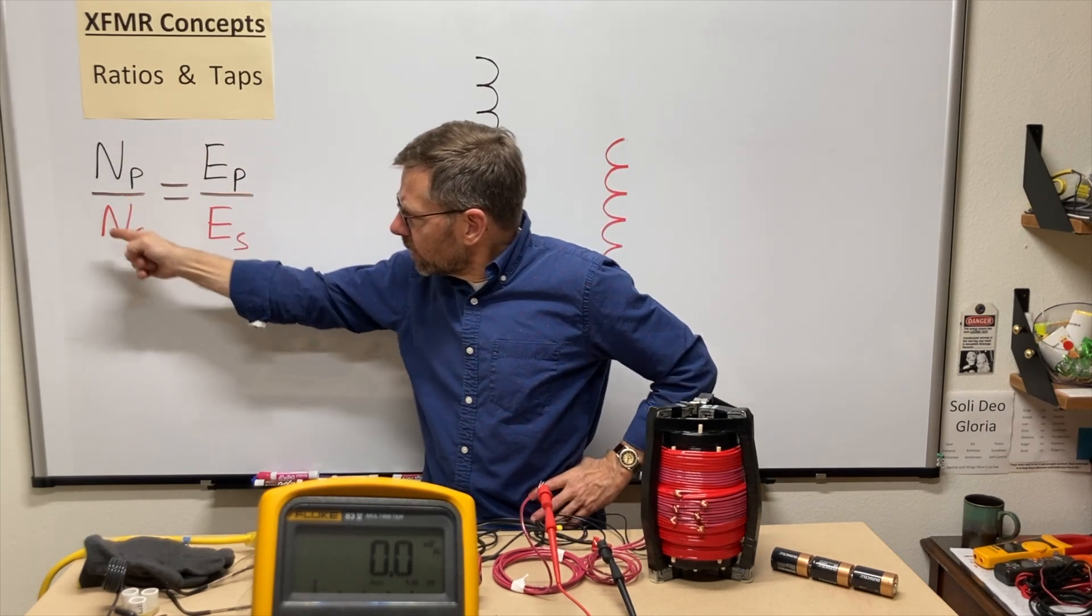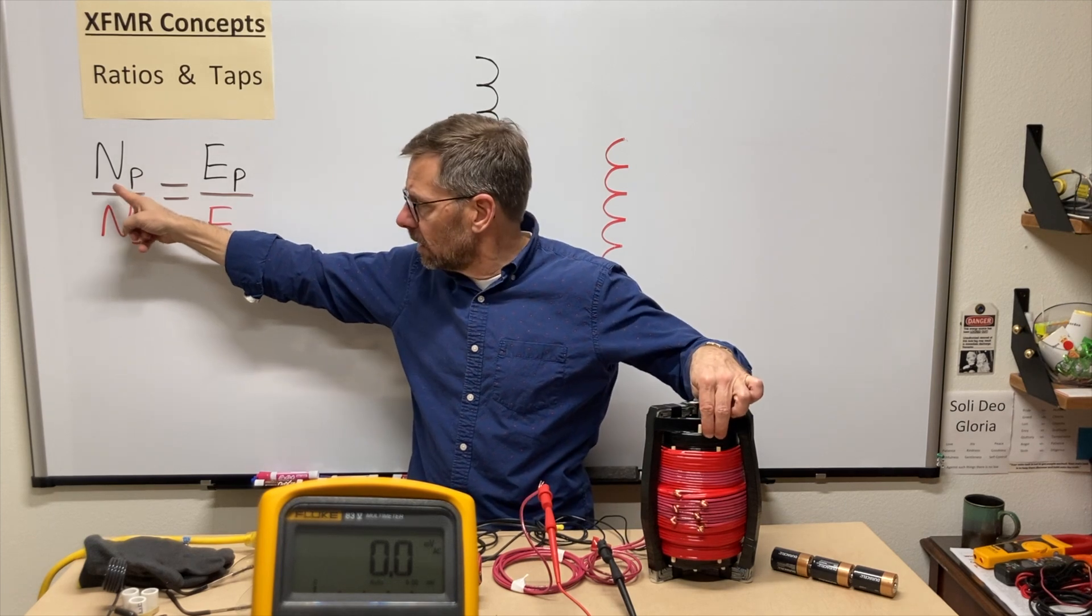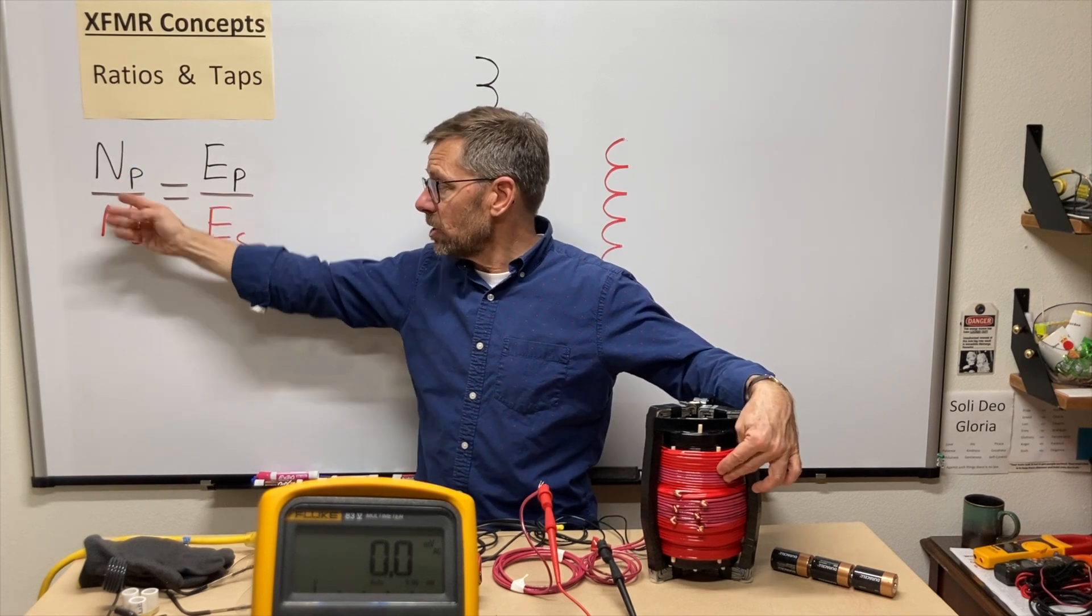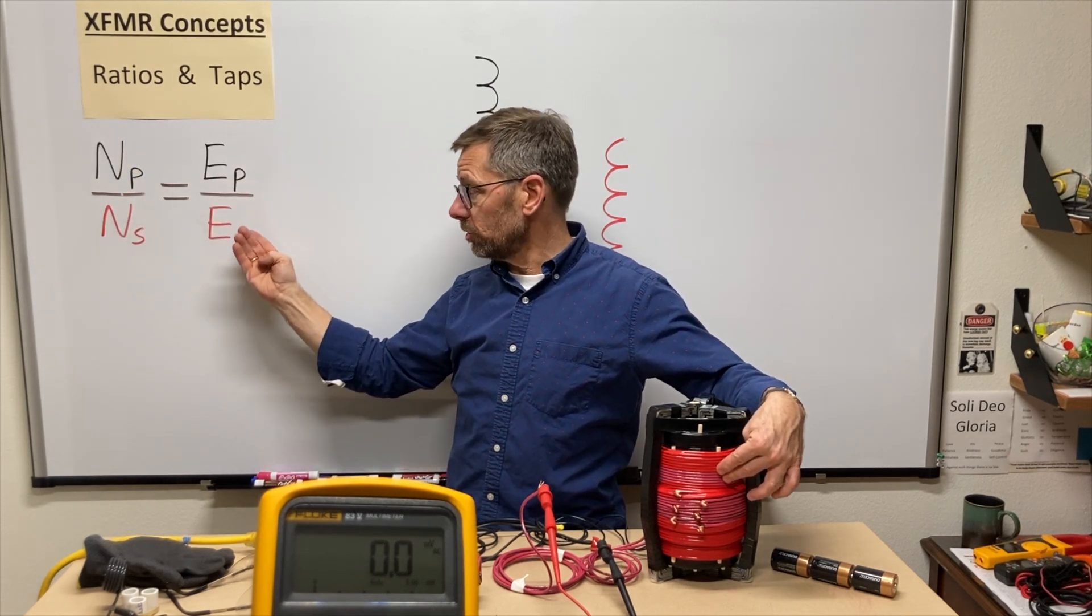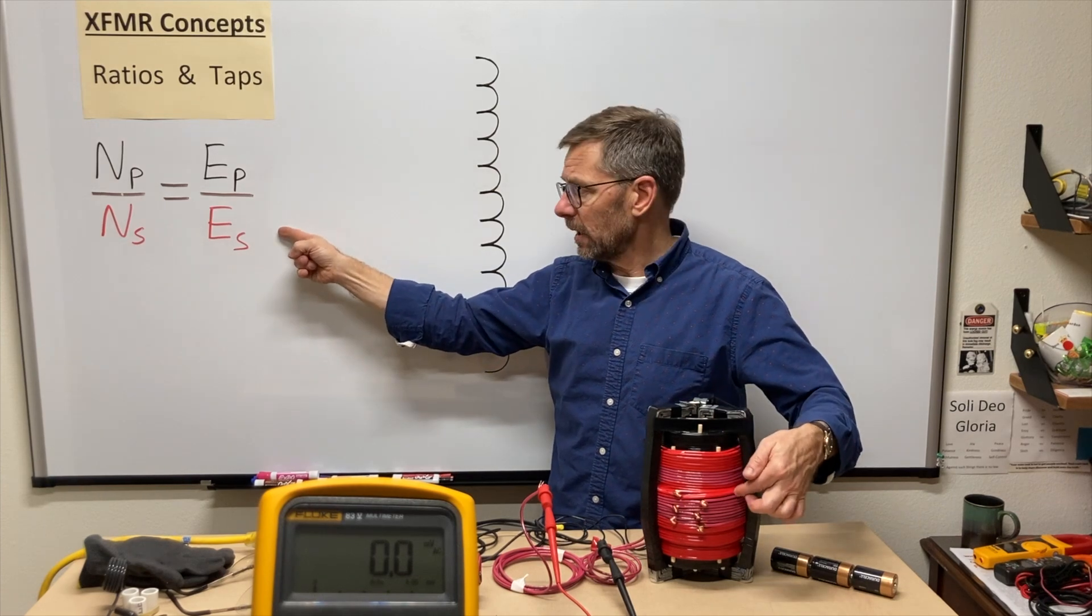Last video, we were introduced to this. The number of turns in the primary relative to the number of turns in the secondary should equal, or that ratio is directly proportional to the voltages, primary to secondary.